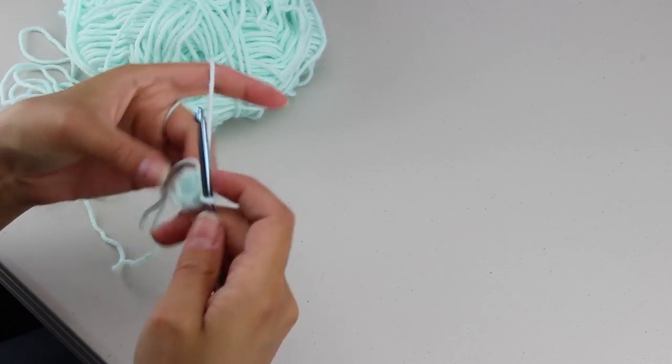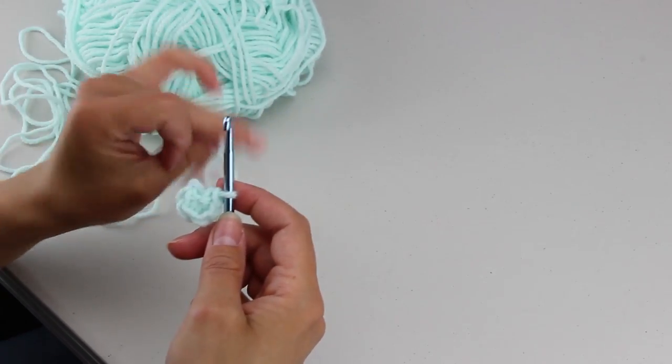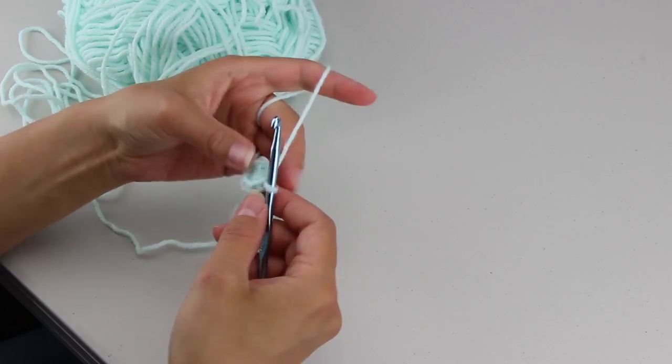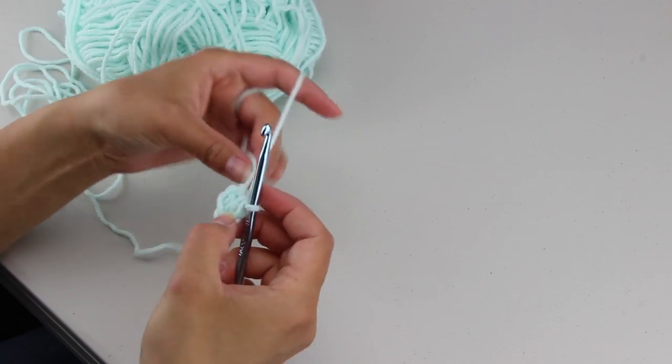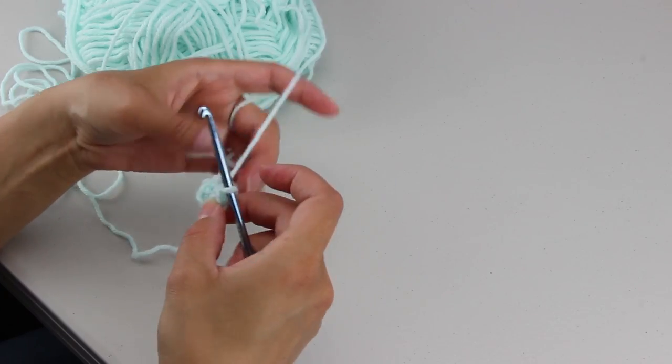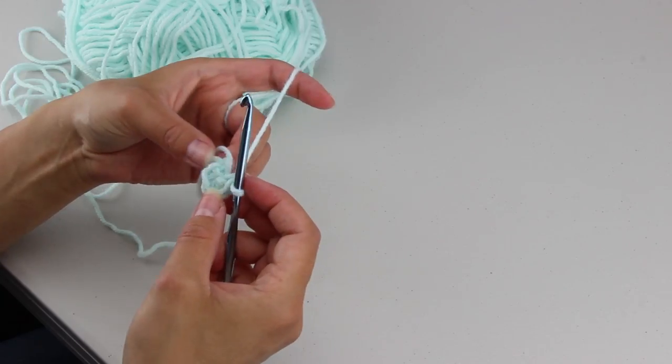And now instead of doing a slip stitch into the first I want to just continue working all the way around so that I don't have the seam showing when this is finished. If you're doing different colors or you're changing and doing stripes or anything you might want to change it up but I'm not going to do that.